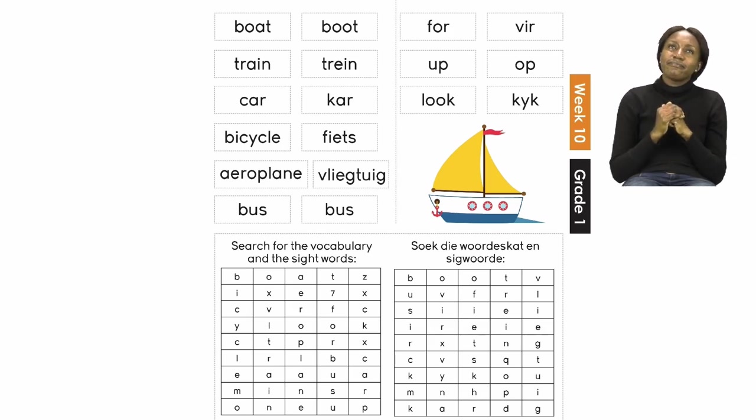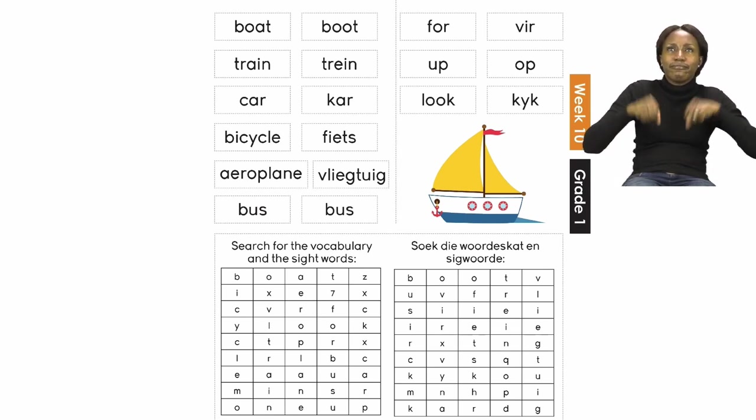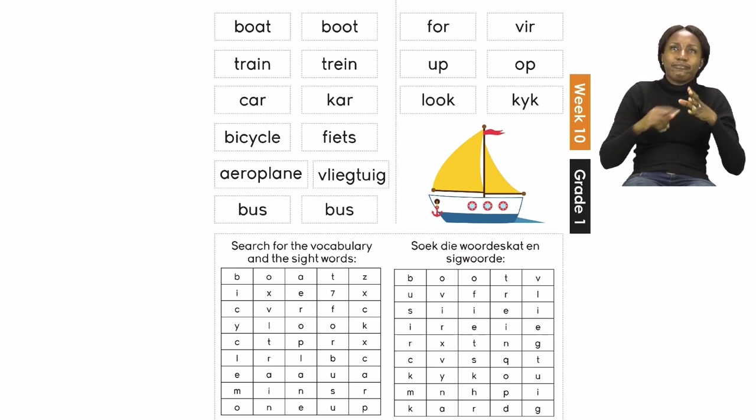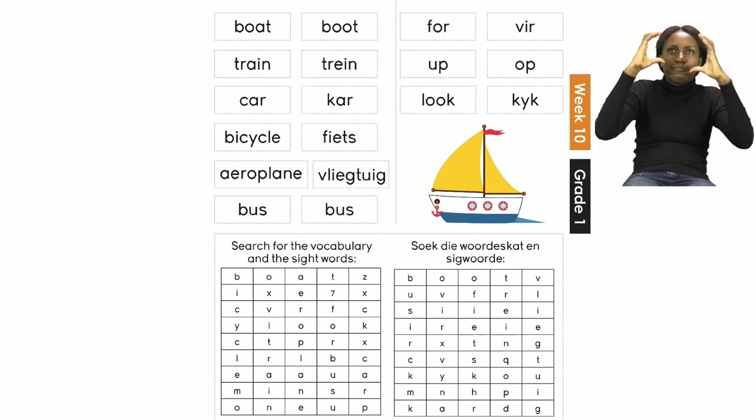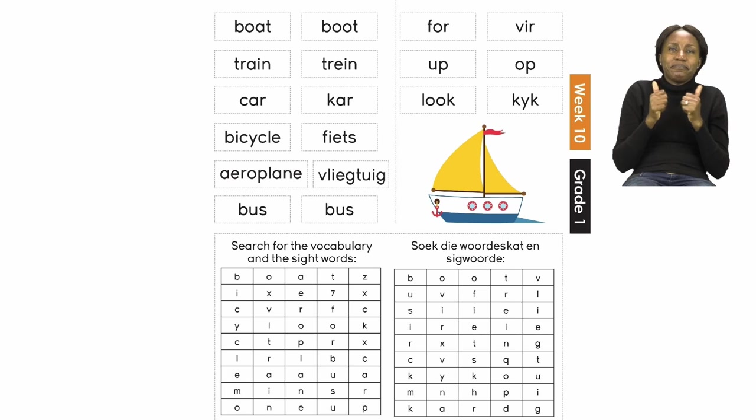We have boat, train, car, bicycle, airplane, bus. Well done! Now we all know what these things are so as we go along in the lessons you'll definitely see pictures of them. Let's now do the sight words.